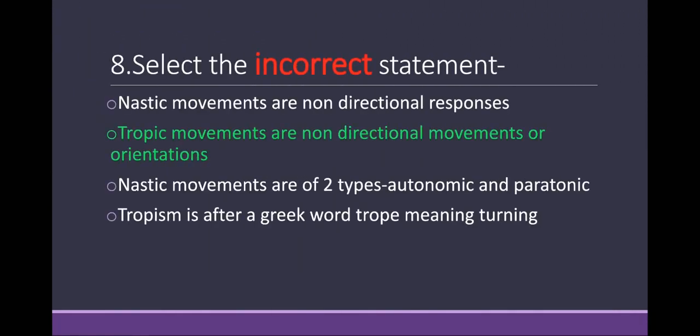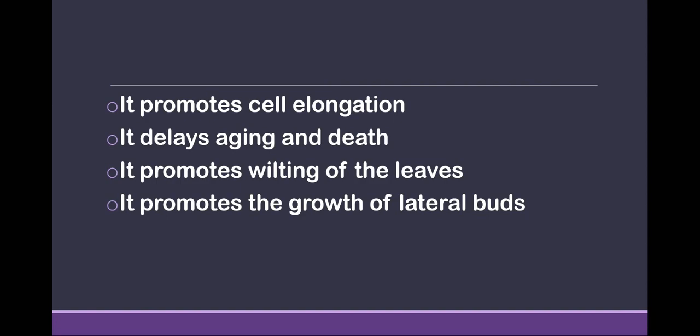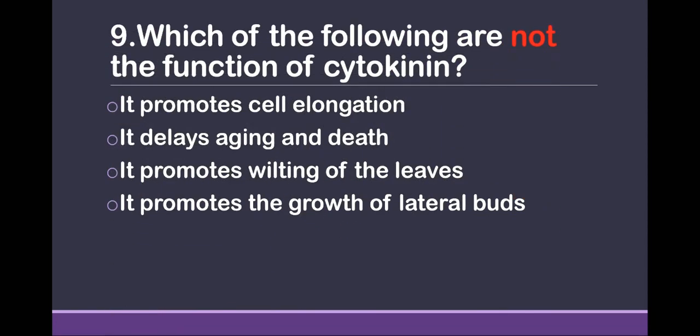Question 8: Select the incorrect statement. Options are: nasty movements are non-directional responses; tropic movements are non-directional movements or orientations; nasty movements are of two types — autonomic and paratonic; tropism is after the Greek word 'trop' meaning turning. The answer is: tropic movements are non-directional movements or orientation.